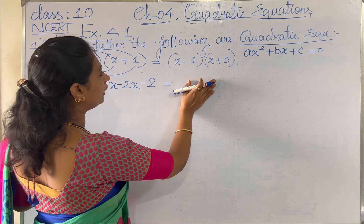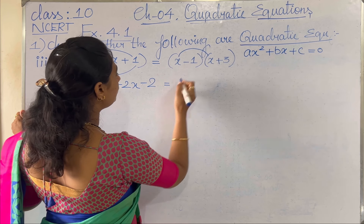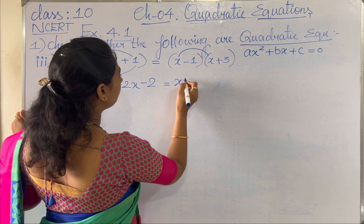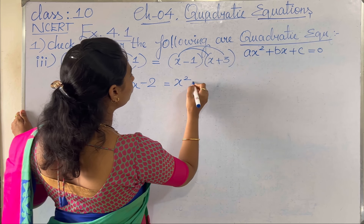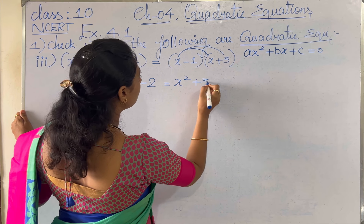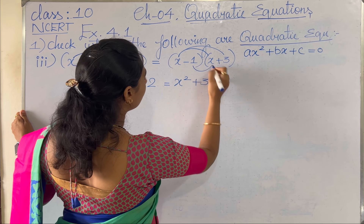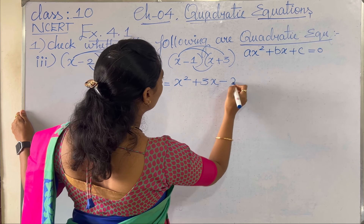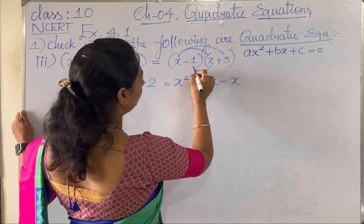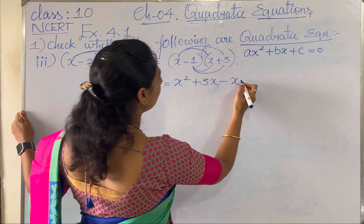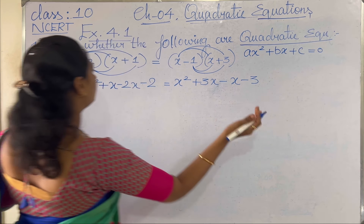Similarly, we have to multiply on the right hand side. x times x gives x². x times 3 gives plus 3x. Minus 1 times x gives minus x. Minus 1 times 3 gives minus 3.